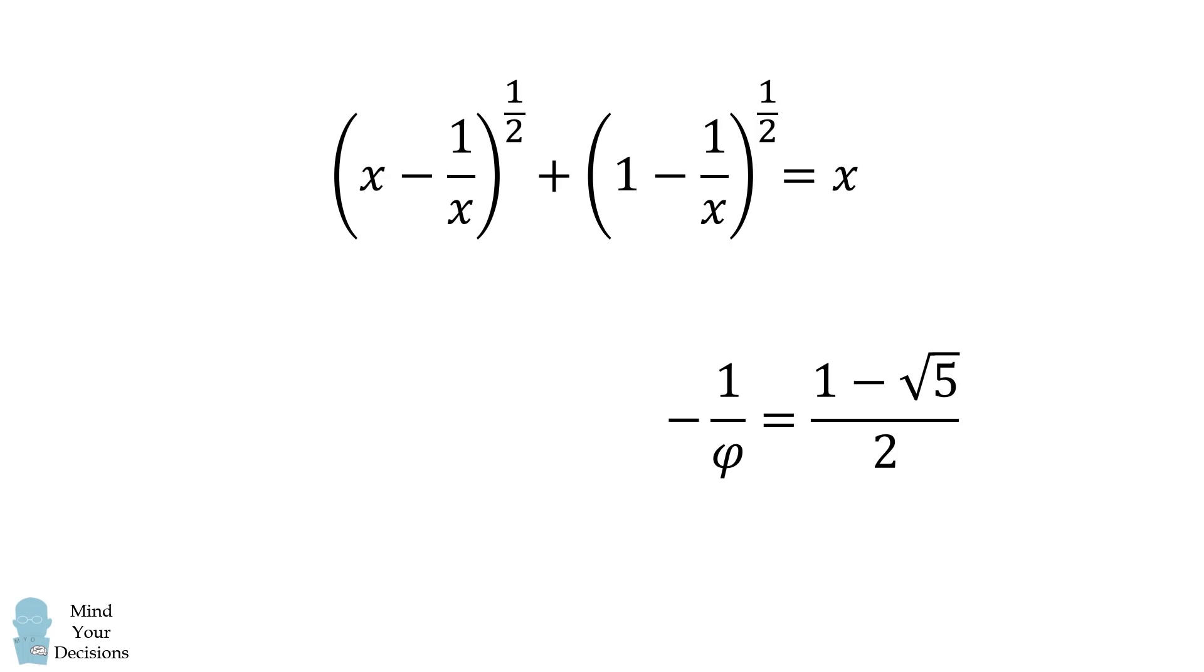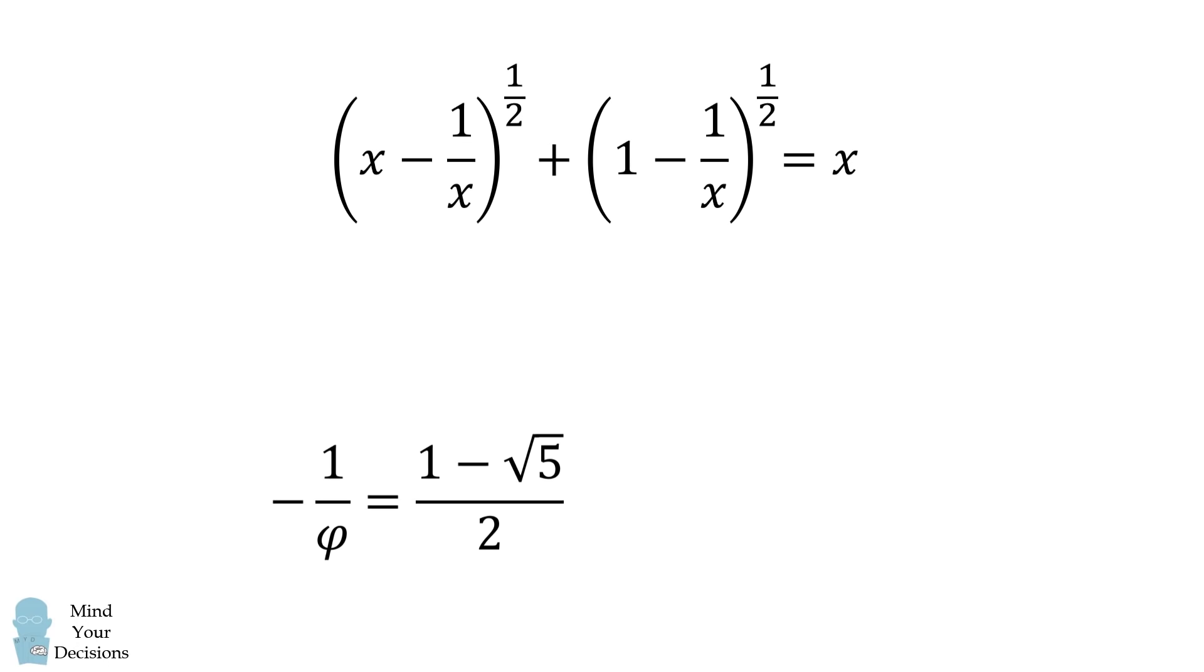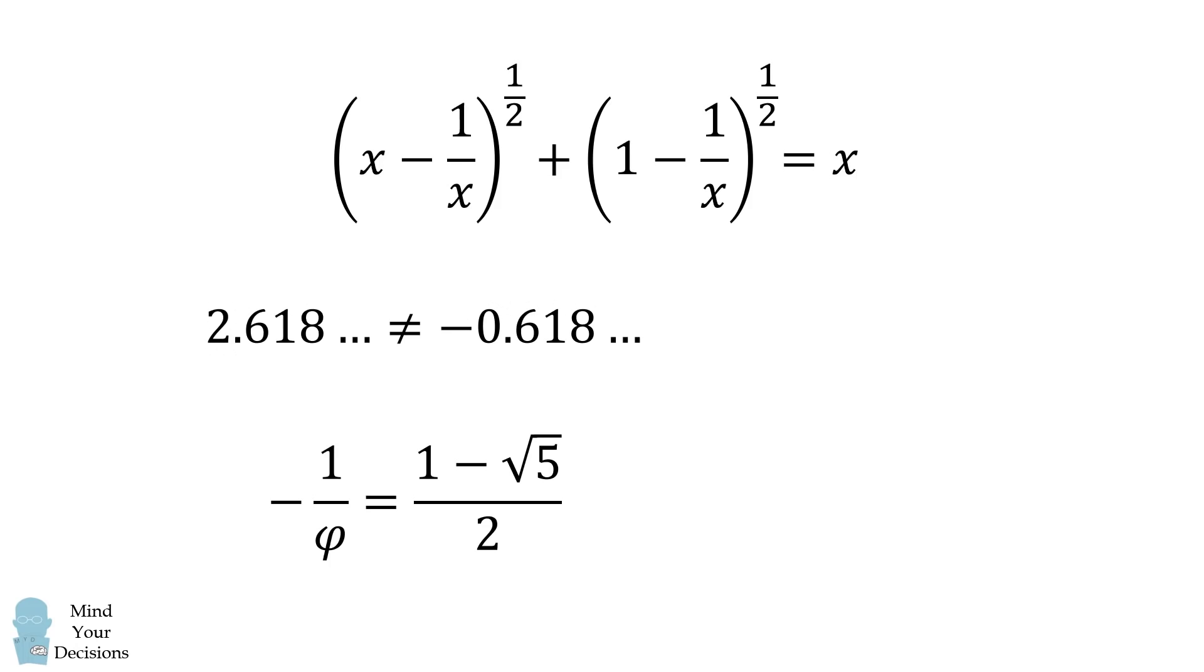We can actually see this is not going to be a possible solution, because the sum of two square roots will be equal to x. The sum of two square roots should be a non-negative number, and here x is a negative number. But we'll go ahead and substitute in, and we'll see that this is not a solution. So we can eliminate this possibility.